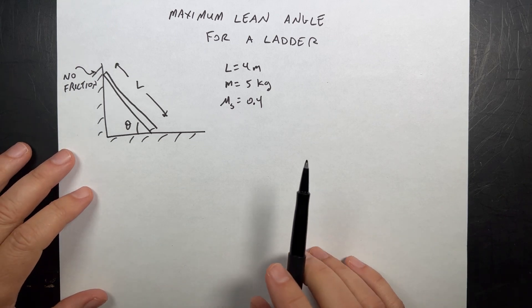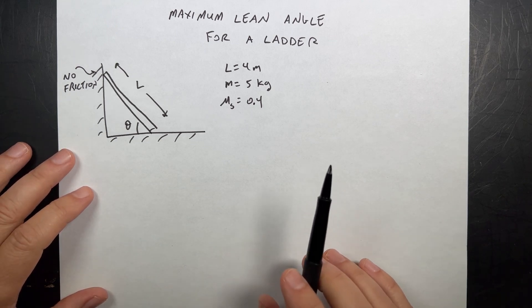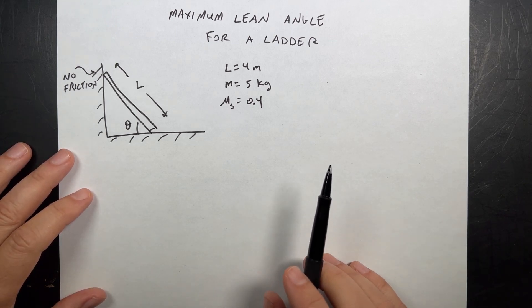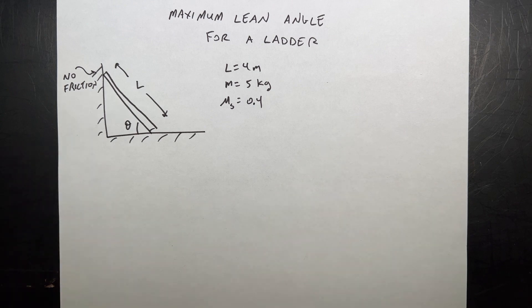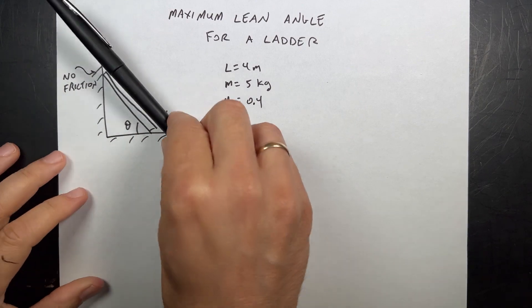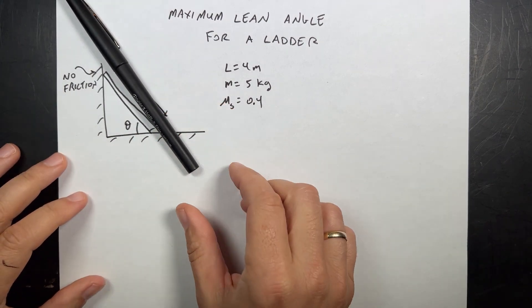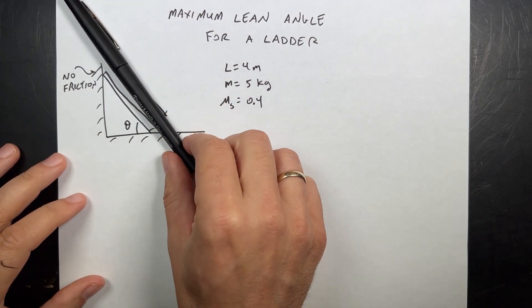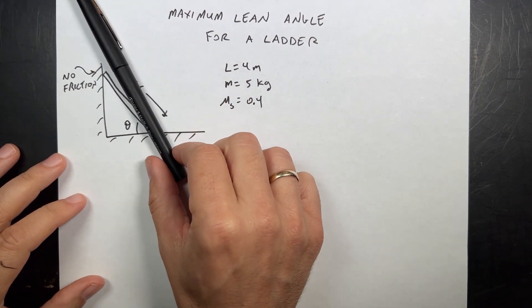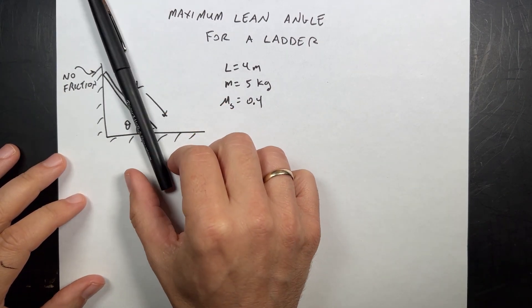This will be both a fun and practical problem. Suppose that you have a ladder — because who doesn't have a ladder? Everyone needs a ladder. And you lean it up against a wall like that. What angle can you put it at?